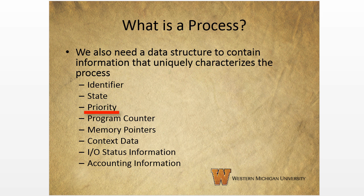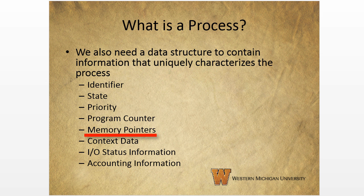The priority simply gives us a level of priority relative to any other processes. The program counter holds the address of the next instruction in the program to be executed. Memory pointers include pointers to the program code and data associated with this process, plus any memory blocks shared with other processes. Context data is data present in registers in the processor while the process is executing.